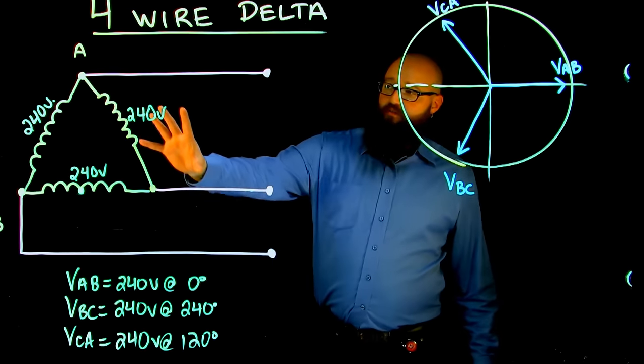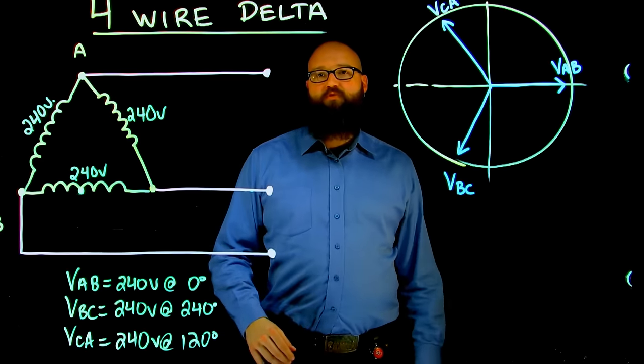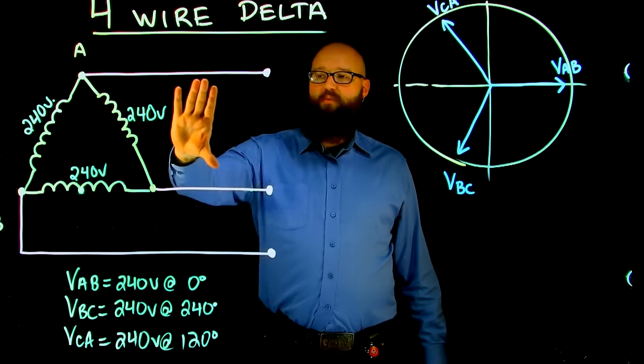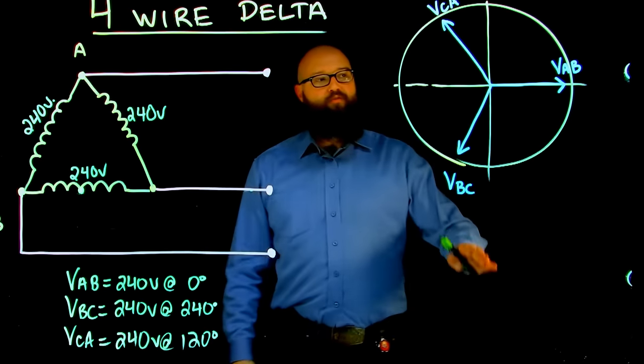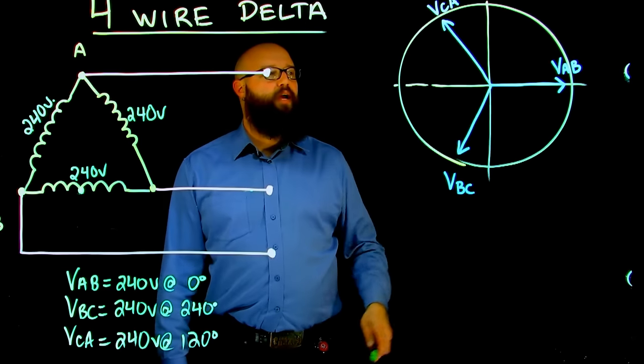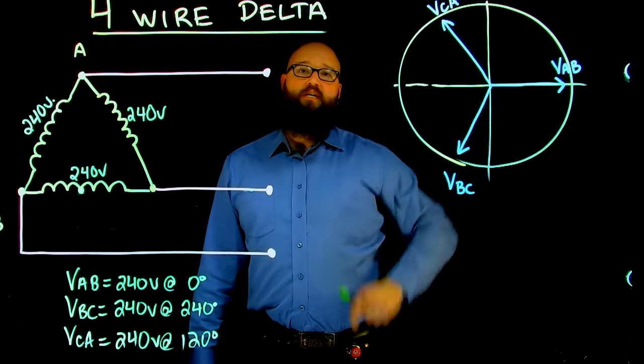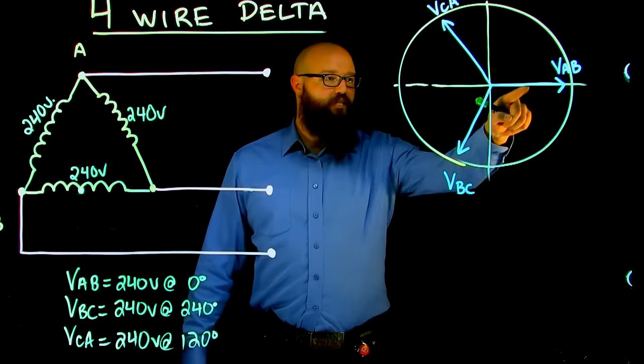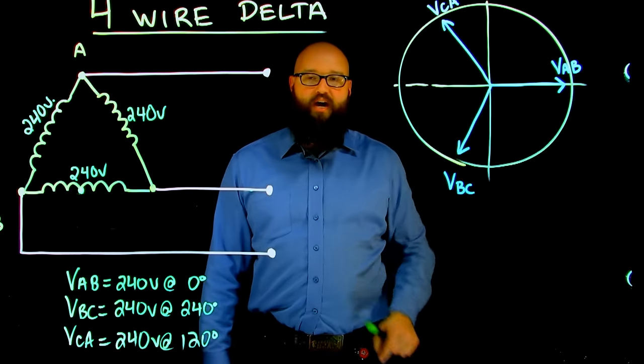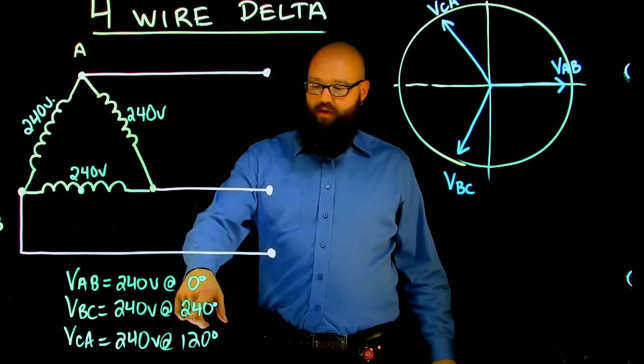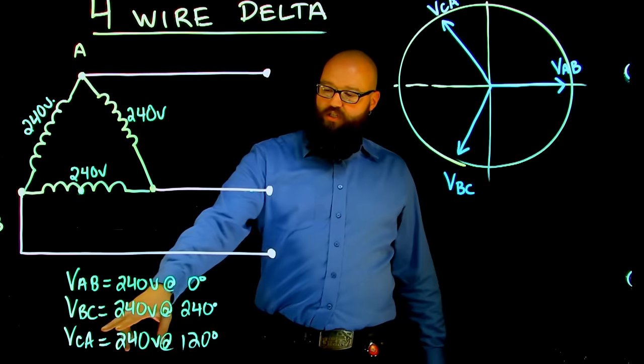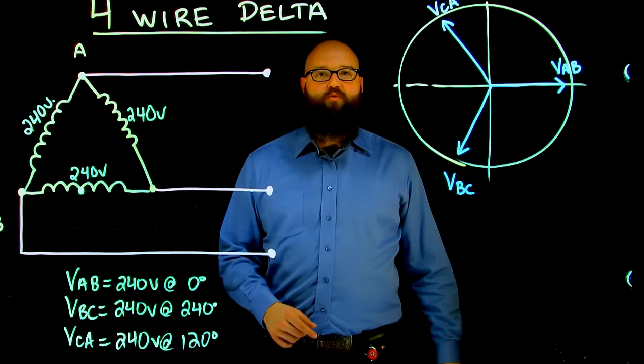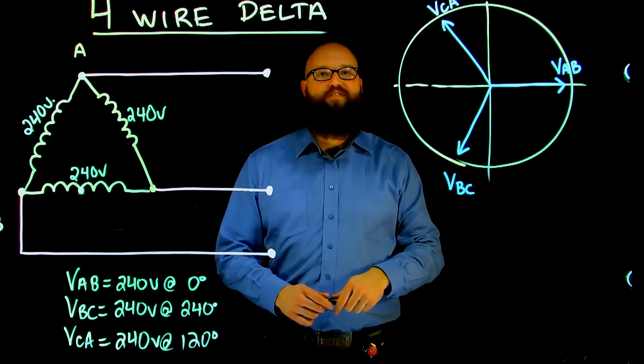First of all, I have a 240 volt three-wire delta system drawn out here, which means we have 240 volts on each phase. It also means we have 240 volts line-to-line. I have it represented over here on our Cartesian plane. We have voltage A to B is our reference at zero, and we have 240 volts at zero degrees. I then have B to C 120 degrees behind that, which is also 240 volts, but now it's at 240 degrees, and I have voltage C to A, which is 240 volts as well, at 120 degrees or 120 degrees behind my B to C phase.